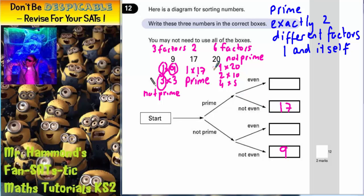The final number, 20. Well, we've already said that 20's got six factors, which means if it's more than two factors, it is not prime. So if we go back to the start, 20 is not prime, but it is even. So it has to go in that box. So 20 is not prime, down this arrow, but it is even up the second arrow.